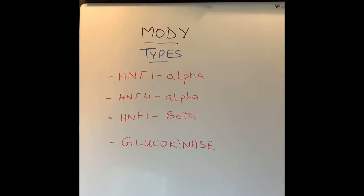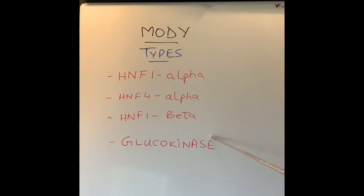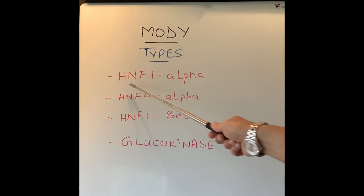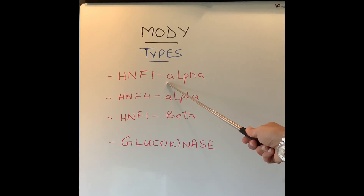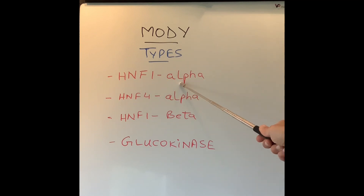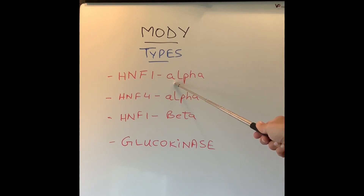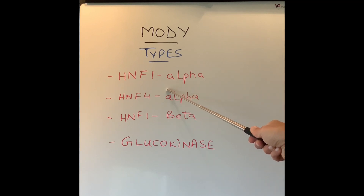These are the different types of gene defects, or types of MODY, that one can develop. HNF1-Alpha is the commonest type of MODY, and over 70% of people who develop MODY will have this type of gene defect. This does not usually require insulin and can be treated with tablets.